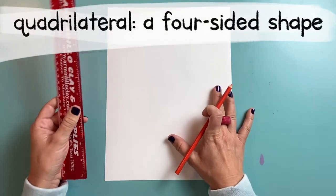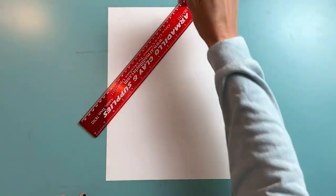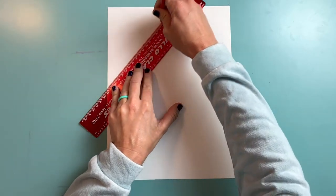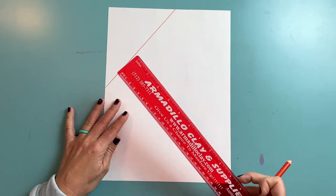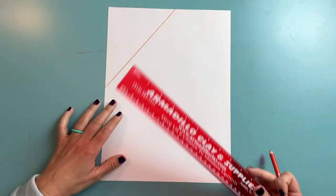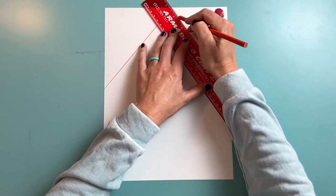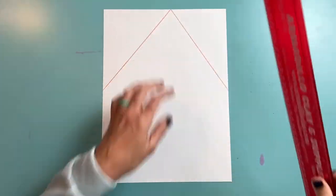A quadrilateral is a four-sided shape, so we're going to go from one side of our paper to the other side, making a straight line that reaches from edge to edge of our paper. It doesn't matter where, as long as it goes from one edge to another. I'm going to do the same thing across this way, going from that end of the line to another edge of my paper.